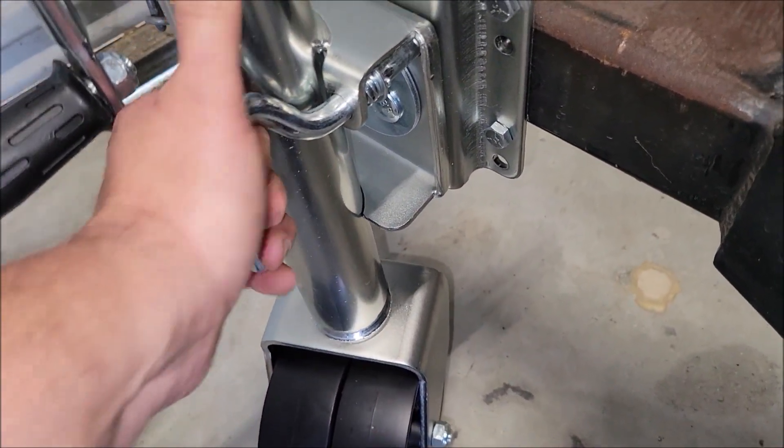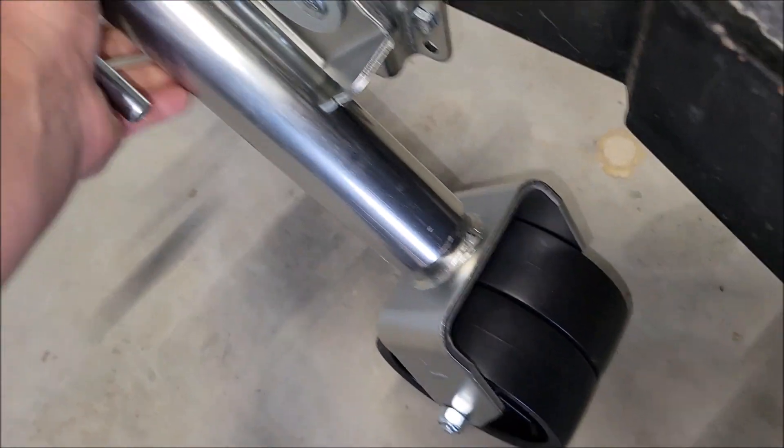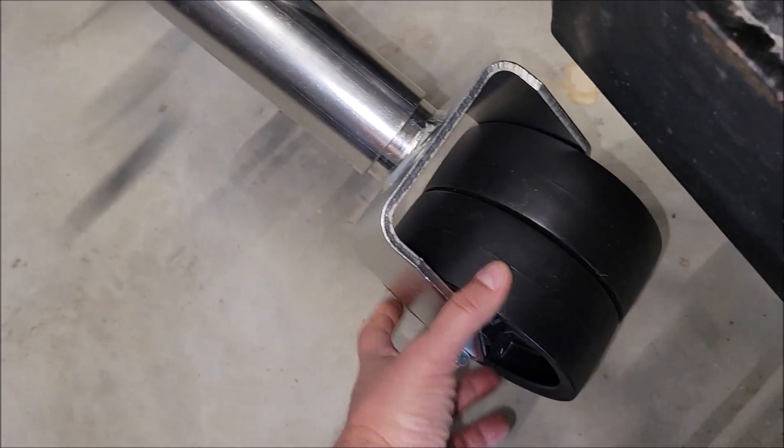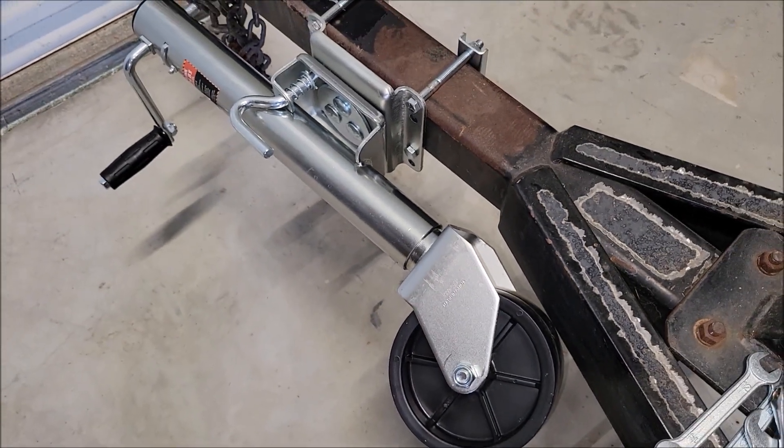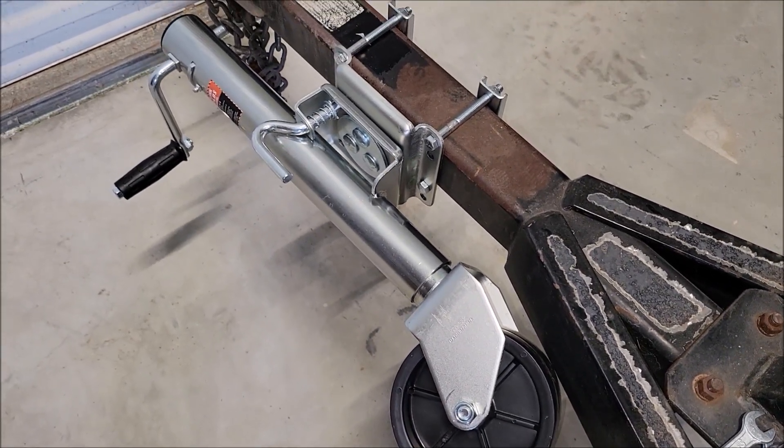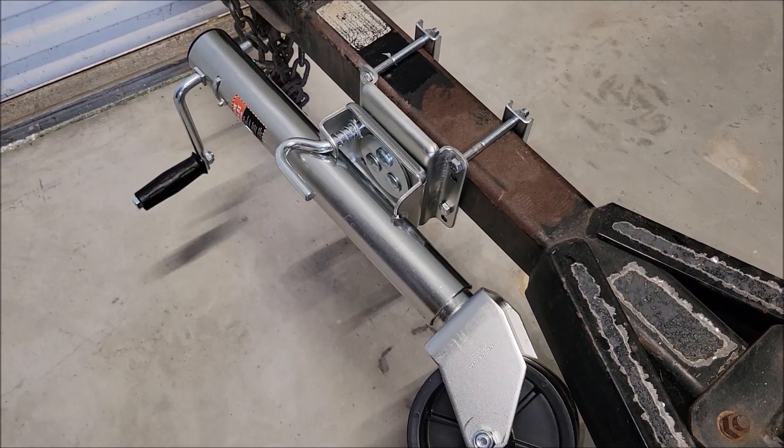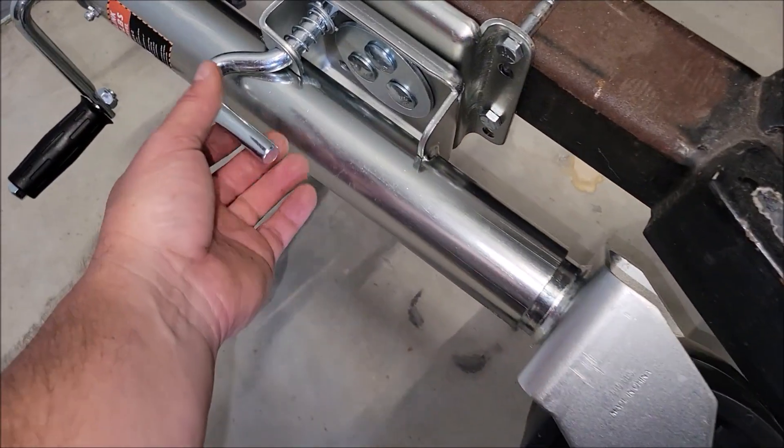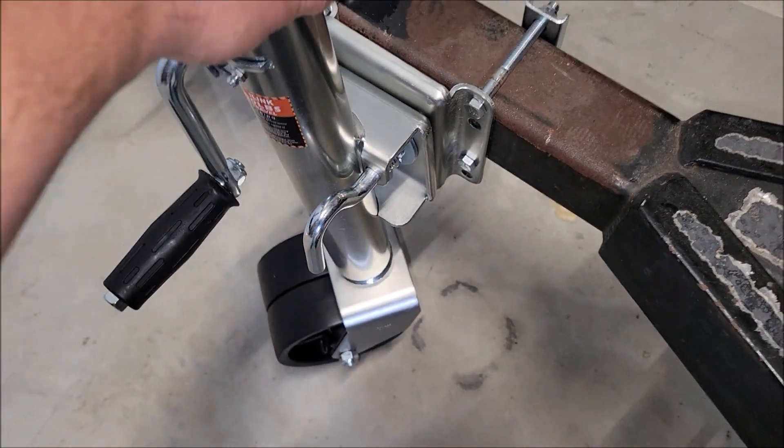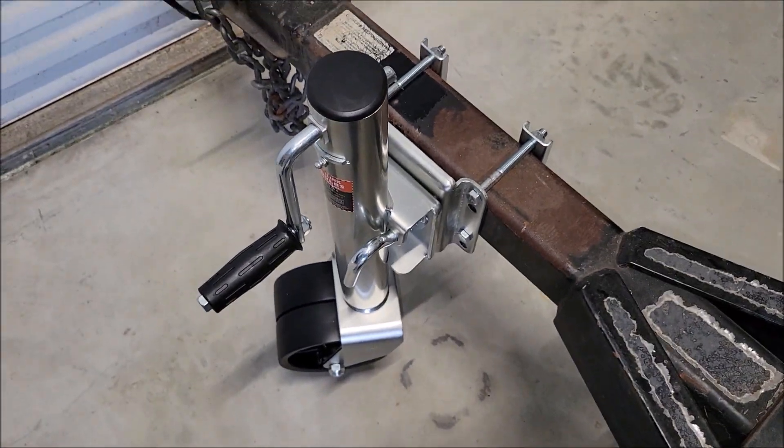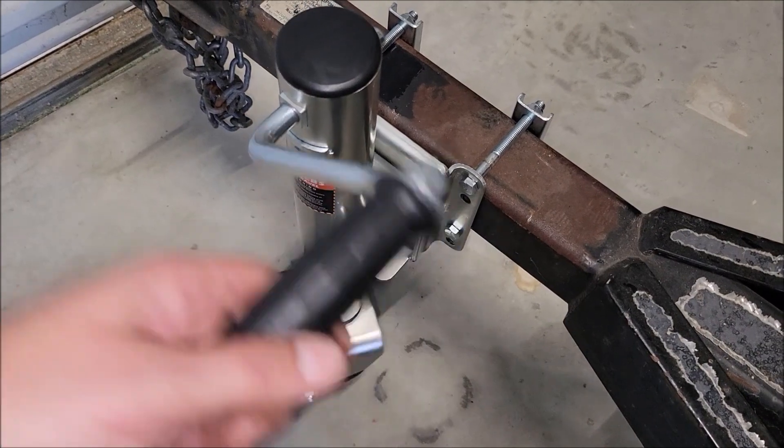So you just pull this right here and it swivels. So you can just basically swivel that. Where I have it right now, it would just pop up like this and sit against the trailer. And then when you need to jack it, you just pull this out, swivel it back down, and then now up or down you go.